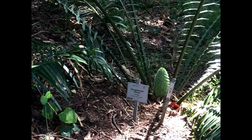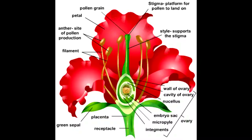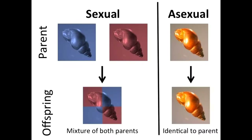Sexual reproduction is the fusion of two specialized sex cells called gametes from a male and female plant. This produces a diploid zygote. Sexual reproduction is more effective in a changing environment as the offspring will have greater genetic diversity and will therefore be more resistant to disease or climate change, but it takes longer periods of time.